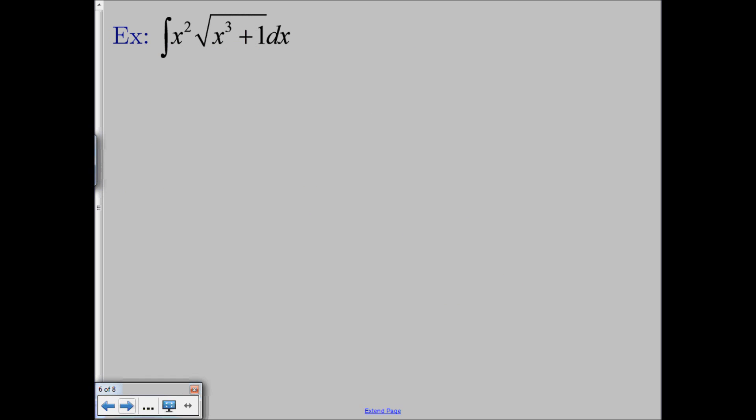Let's try another one: x squared times the square root of x cubed plus 1. With functions like these, if you notice a higher power somewhere and then one power lower somewhere else, you probably want to pick your u to be whatever has the higher power, because when you take the derivative it'll drop the power down one and match what's left over. So we're going to let u be x cubed plus 1. A lot of people would say let u be the square root of x cubed plus 1, but we don't want that — when you take the derivative of the square root of x cubed plus 1, you get 1 over the square root of x cubed plus 1 as part of your derivative, which isn't anywhere else in the integral. But if we let it be x cubed plus 1 and take the derivative, we get du equals 3x squared dx.